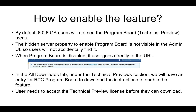This feature is available as a tech preview in 6.0.6. By default, 6.0.6 GA users will not see the Program Board Technical Preview menu option. The hidden server property to enable the program board is also not visible in the admin UI, so users will not accidentally find it. When the program board is disabled, if the user goes directly to the URL, an informational message is provided telling the user the feature is not enabled. To enable the feature, in the All Downloads tab under the Technical Preview section, there is an entry for RTC Program Board to download the instructions. The user needs to accept the technical preview license before they can download.